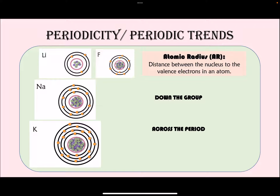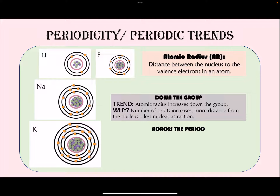Going down the group, we see that atomic radius increases. Using the Bohr model, we can see that there are more orbits as we go down, so the outermost orbit or valence shell becomes farther and farther from the nucleus. There is less nuclear attraction, so the atomic radius increases. Remember, for periodic trends you want to understand not just what is happening but also why it is happening.